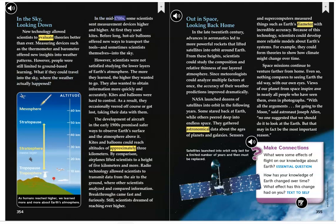In the mid-1700s, some scientists sent measurement devices higher and higher. At first, they used kites. Before long, hot air balloons offered new ways to transport the tools, and sometimes scientists themselves, into the sky. However, scientists were not satisfied studying the lower layers of Earth's atmosphere. The more they learned, the higher they wanted to go. They also wanted to obtain information more quickly and accurately. Kites and balloons were hard to control. As a result, they occasionally veered off course or got lost, taking their data with them.